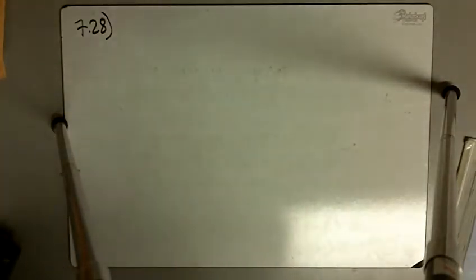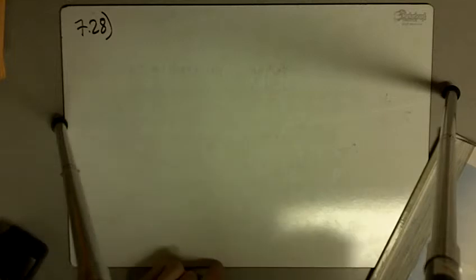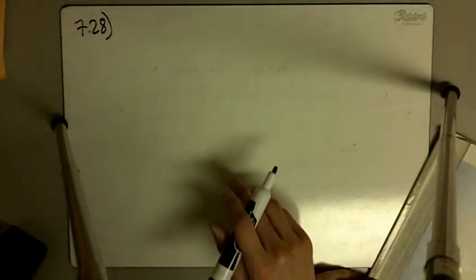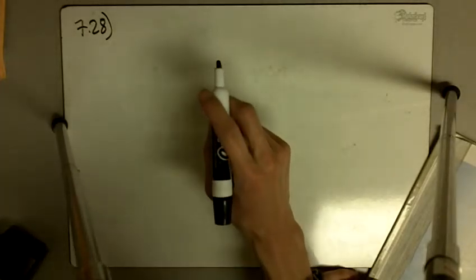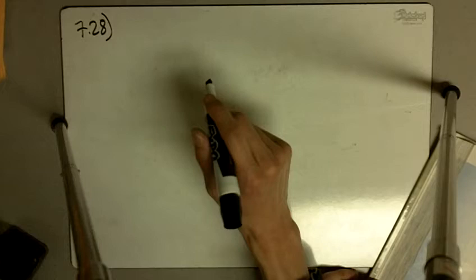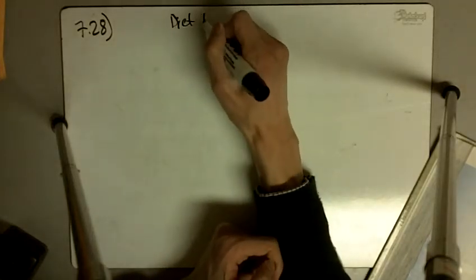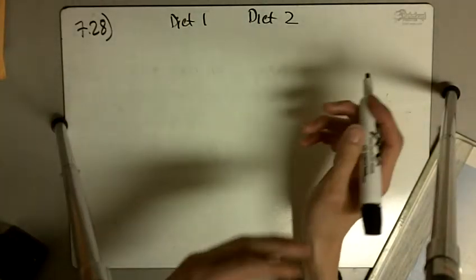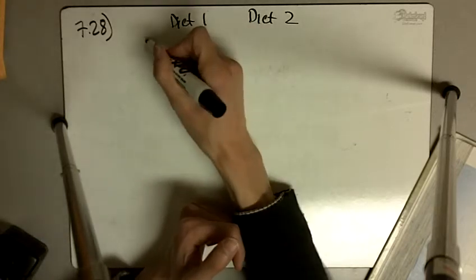728. Back fat thickness is the variable used in evaluating the meat quality of pigs. An animal scientist measured back fat thickness in pigs raised on two different diets with the results given in the table. So we've got diet 1 and diet 2. Beforehand, we don't know if one diet is going to be better than the other, so here we're going to have a two-sided test.